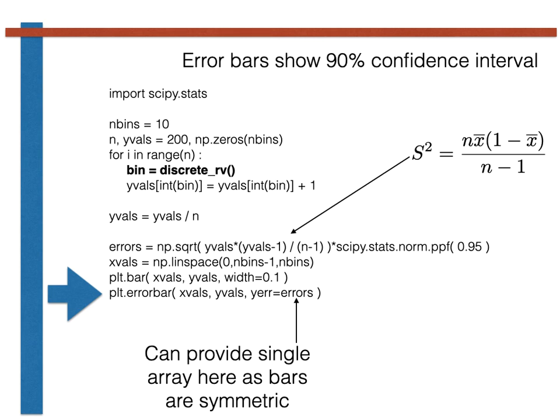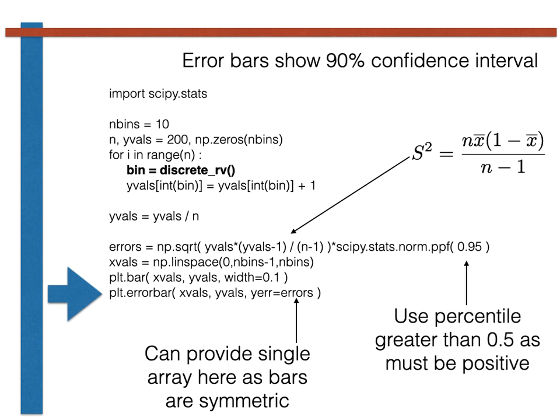One final thing to note is that the width of the error bar should be a positive number. You should thus evaluate the percentile that is greater than 0.5 here in order to ensure that the quantity in the array called errors are positive.